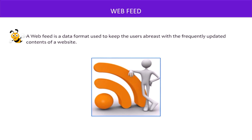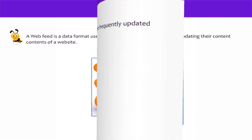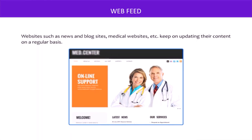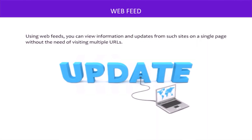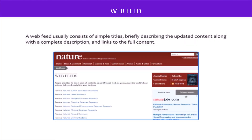A web feed is a data format used to keep users updated with the frequently updated contents of a website. Websites such as news and blog sites, medical sites, etc. keep on updating their contents on a regular basis. Using web feeds, we can view information and updates from such sites on a single page without the need of visiting multiple URLs. A web feed usually consists of simple titles briefly describing the updated content, along with a complete description and links to the full content as well.